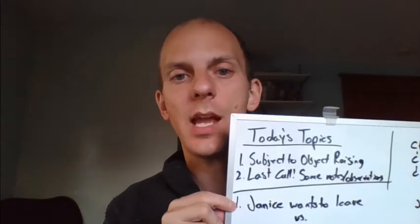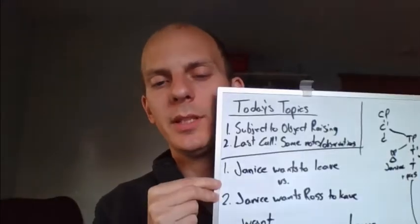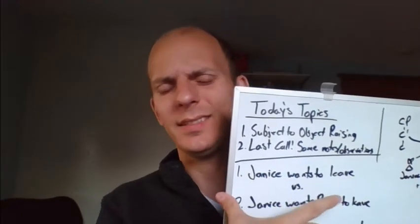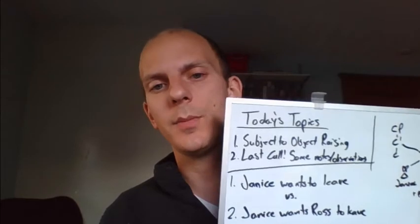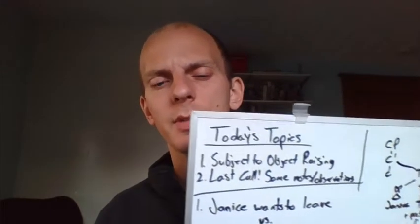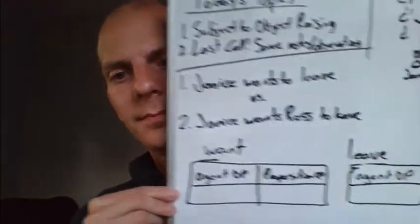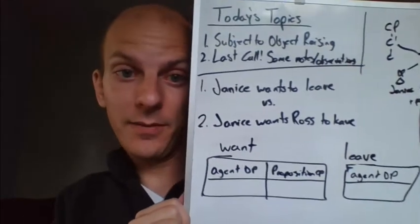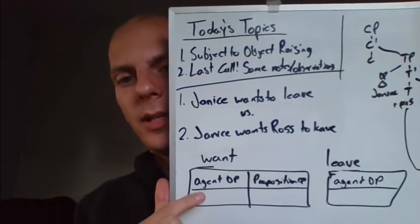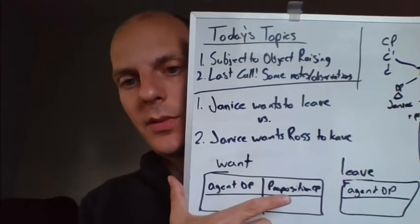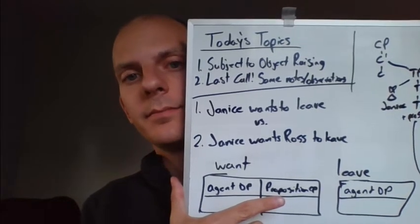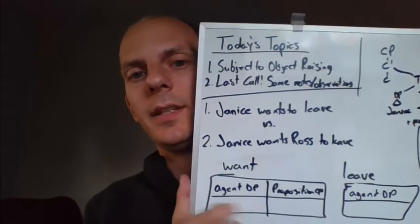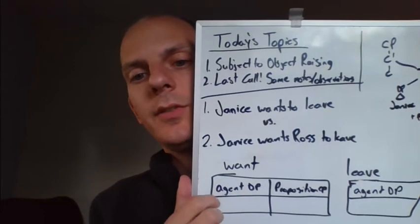Let's take a quick review to remember what a subject control sentence looks like, using 'Janice wants to leave' as our example. Whenever we're dealing with these tricky predicates with a mismatch between not enough subjects and theta roles, we want to start by making our theta grids. Here's the theta grid for 'to leave': leave just takes an agent. And 'want' takes an agent - somebody is doing the wanting - and it takes a propositional CP. They want something, like Ross to leave. So it only takes two theta roles.